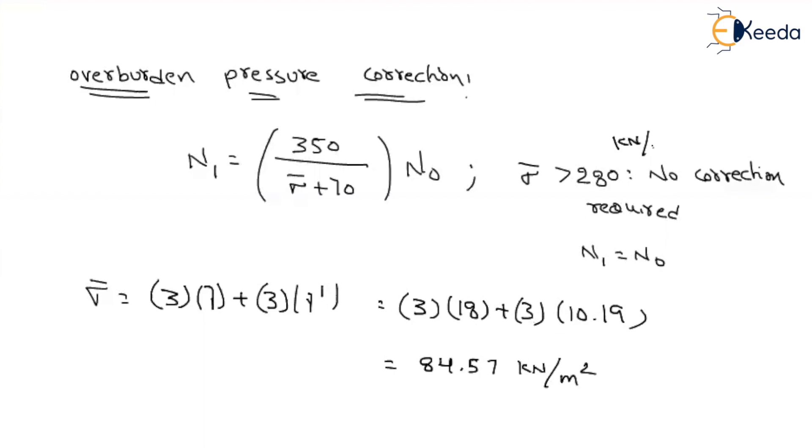Units are very, very important. This 280 is also in kilonewton per meter square. Now, is it less than or greater than 280? I think it is less than 280. That's why overburden pressure correction will be applied. What is the final value? N1 will be equal to 350 divided by 84.5 plus 70 into the observed value, which is 25. That implies after the correction of overburden pressure, what is the standard value we are getting? We are getting around 56.6. Let us consider it as nearly equal to 57. See, almost increased half of the value, isn't it? This is the final value after the overburden pressure.